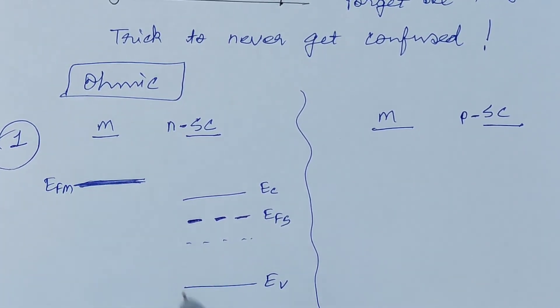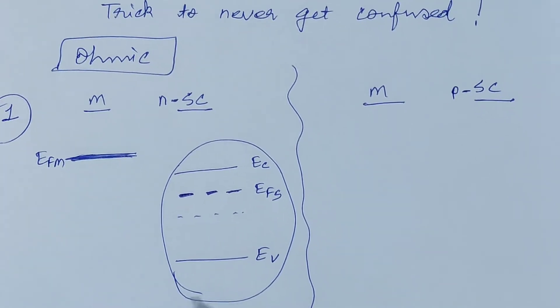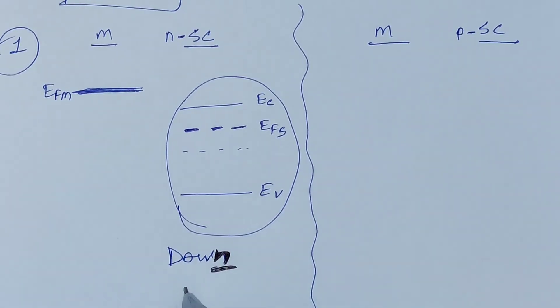Now see that the energy band diagram of n-type semiconductor is below or down. Down stands for n-type semiconductor here for the trick.